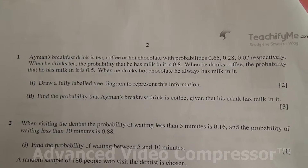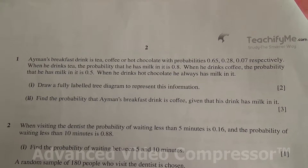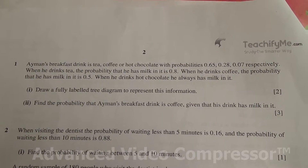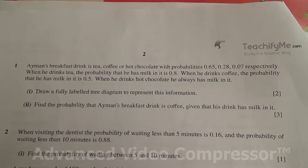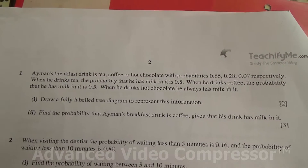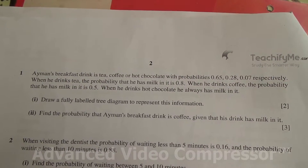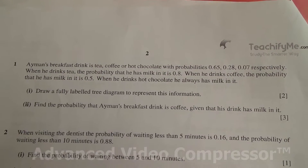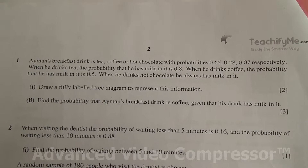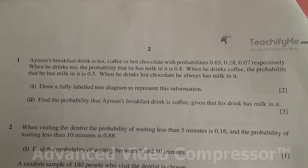Question number 1. Eamon's breakfast drink is tea, coffee, or hot chocolate with probabilities 0.65, 0.28, and 0.07 respectively.